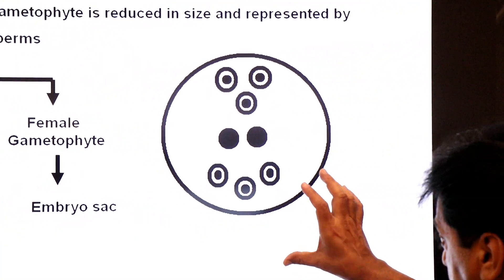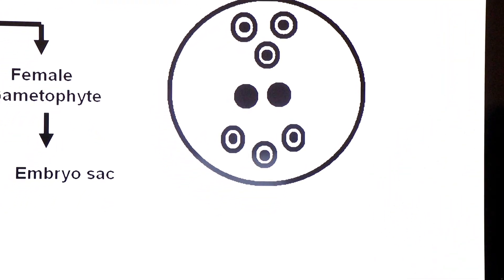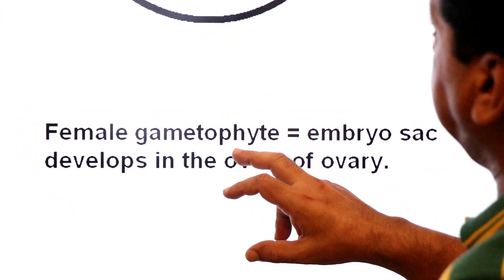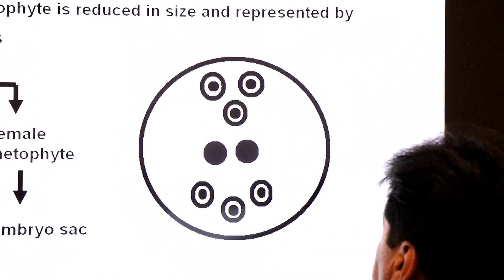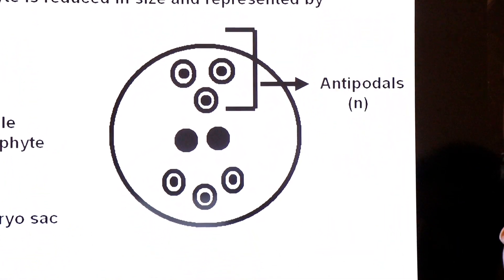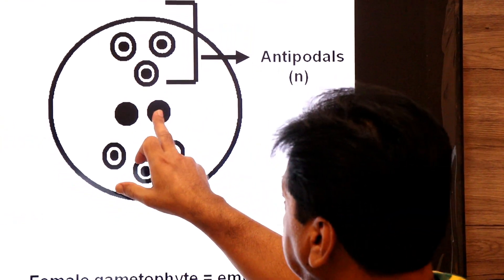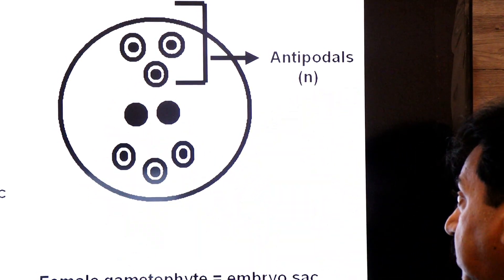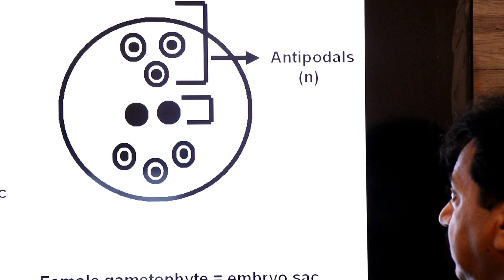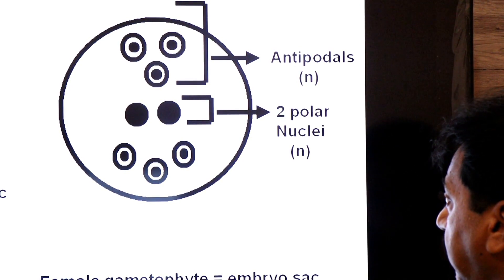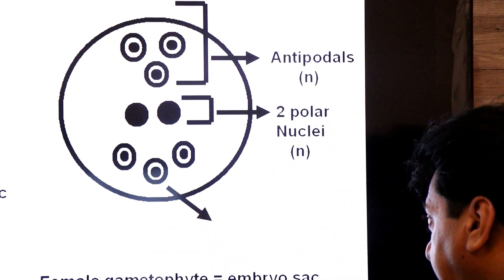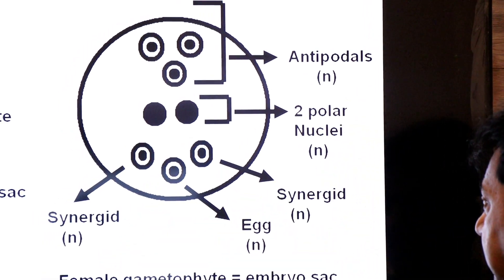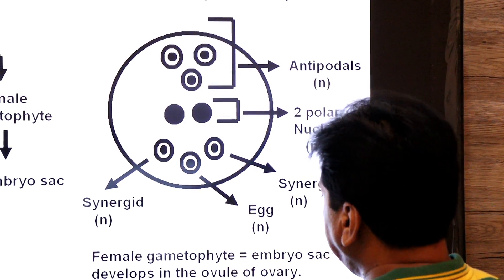The mature embryo sac of angiosperms is the female gametophyte. The embryo sac develops in the ovule and the mature embryo sac contains seven cells: three haploid cells known as antipodals, a large central cell containing two polar nuclei, and at the micropylar end two synergids and one egg cell. This seven-cell structure is the embryo sac - the female gametophyte.